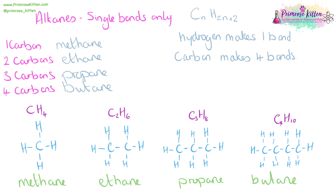Methane has one carbon and four hydrogens. Ethane: two carbons, six hydrogens. Propane: three carbons, eight hydrogens. And butane: four carbons and ten hydrogens.